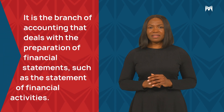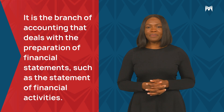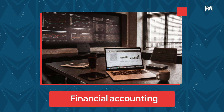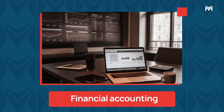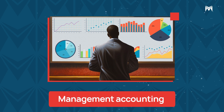Let us briefly look at some of the other areas of accounting. Financial accounting is the branch of accounting that deals with the preparation of financial statements, such as the statements of financial activities — sometimes called statements of profit and loss — the statement of financial position, and cash flow statements. These statements are used to report a company's financial performance to external parties. Management accounting is concerned with providing information to managers within the company to help make decisions. Management accounting includes budgeting, cost accounting and performance evaluation. It is more detailed than financial accounting and not constrained to a prescribed format, so it can be customized to management's needs.